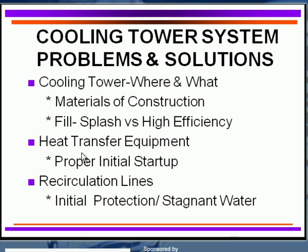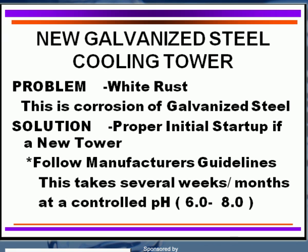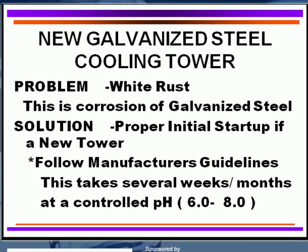Starting with cooling towers, one of the most common areas is a new galvanized steel cooling tower. One of the problems that occurs is white rust — this is corrosion of galvanized steel. We call it white rust because it's white in color, as contrasted to the red rust of mild steel.